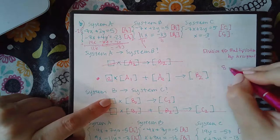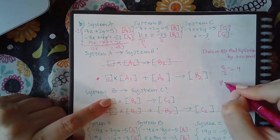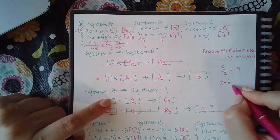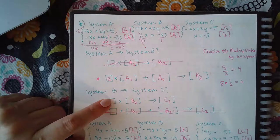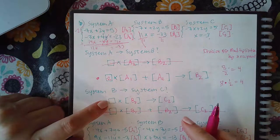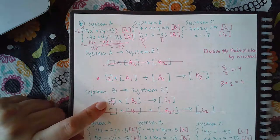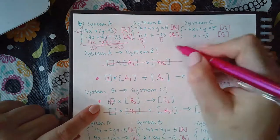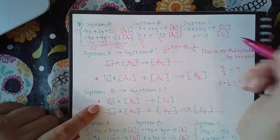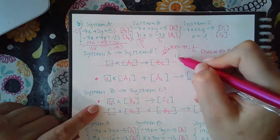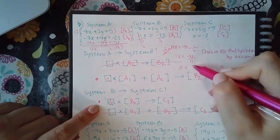But the answer choice says multiply B2 by something, not divide. This is where it's important to understand that division is the same as multiplication by a reciprocal. For example, 8 divided by 2 equals 8 times one-half — both give 4. So instead of dividing by 11, I multiply by the reciprocal 1/11. Multiplying 11x = negative 33 by 1/11 on both sides: the 11s cancel, giving x = negative 3. It works out exactly the same as division.